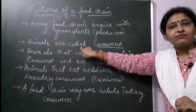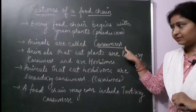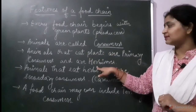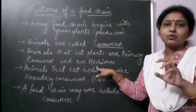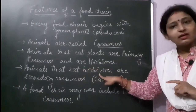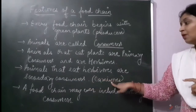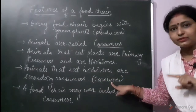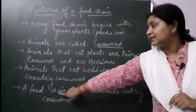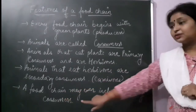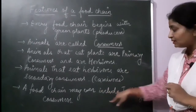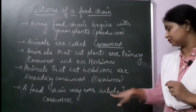The second characteristic feature is that animals are called consumers. Animals that eat plants are primary consumers and they are called herbivores — the animals dependent on green plants for their food. Animals that eat herbivores are secondary consumers, also called carnivores, which are dependent on herbivores for their food. A food chain may even include a tertiary consumer, meaning the secondary carnivore — the carnivore which is dependent on the primary carnivore.